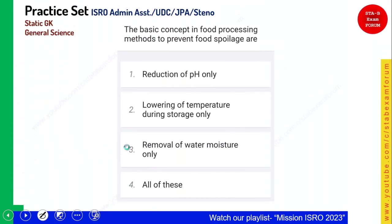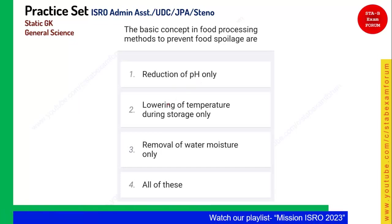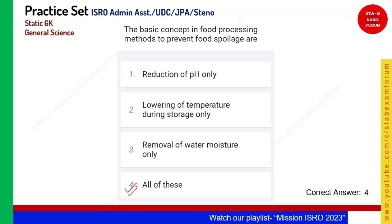The basic concepts in food processing methods to prevent food spoilage are: reduction of pH only, lowering the temperature, removal of water moisture only, or all of these. Reduction in pH basically prevents food spoilage. Lowering temperature — if you put something in your refrigerator, it will not spoil easily. Removal of water moisture — pickles and spices are generally put in the sun so that water moisture is removed, giving them a long shelf life. Option 4, all of these, is the right answer.